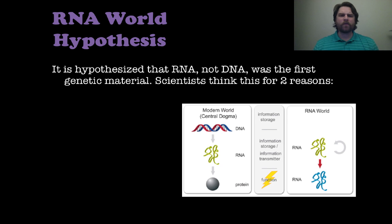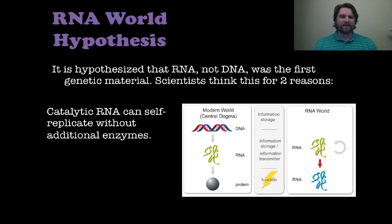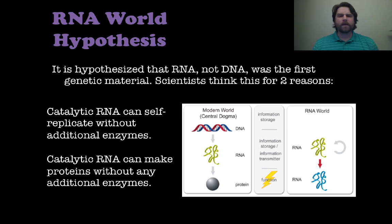The other thing we're going to talk about is the RNA world hypothesis. This is the hypothesis that RNA was the first nucleic acid, not DNA. Scientists think this might be true for a couple of reasons. First, catalytic RNA can self-replicate without additional enzymes — certain types of RNA can actually replicate themselves without ligase, polymerase, or any of that. Second, catalytic RNA can make proteins without any additional enzymes either. So the RNA world hypothesis says RNA came first because it can replicate itself and make proteins without enzymes, and that DNA came much later when enzymes were necessary for it.